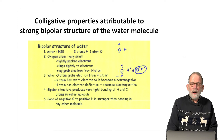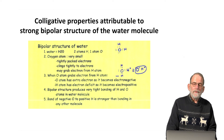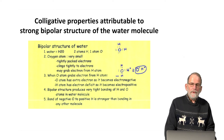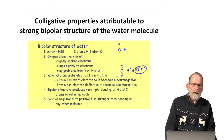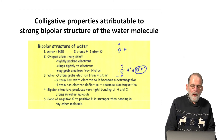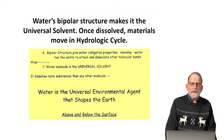The water molecule, which we all know and love as H2O, contains two atoms of hydrogen and one atom of oxygen. As it turns out, the electrons around the oxygen are very tightly bonded to the oxygen atom. As a result, the water molecule is a very aggressive molecule, and the bipolar structure gives the water molecule the ability to attack and disassociate other molecular bonds.